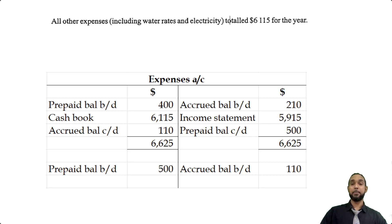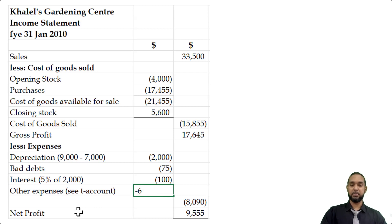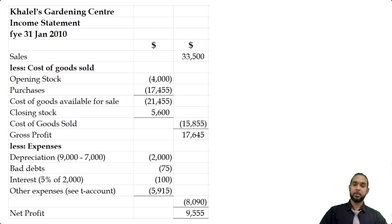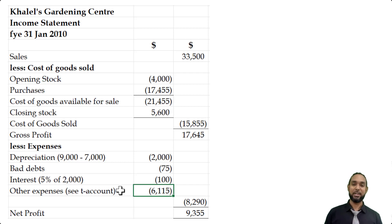Let's put this $5,915 in the income statement. The expenses total $8,090, and subtracting from the gross profit of $17,645 gives net profit of $9,555. Now, if you decided to use $6,115 directly as the other expenses, your net profit would be $9,355. Please comment below and tell me what you think was the correct thing to do — do you think $6,115 was the actual incurred expense figure to use directly, or because of the phrase 'including water rates and electricity,' were we supposed to do the T-account and arrive at $5,915?